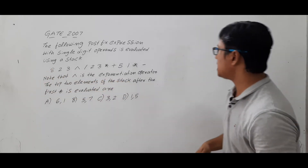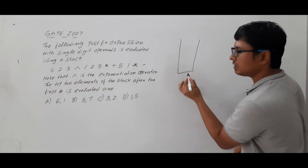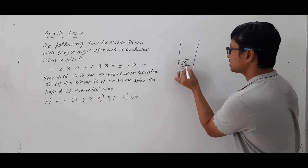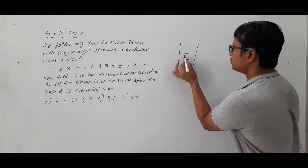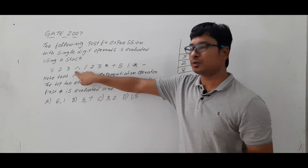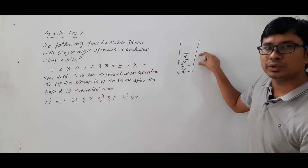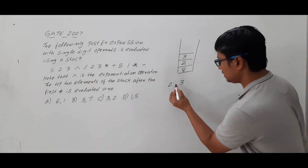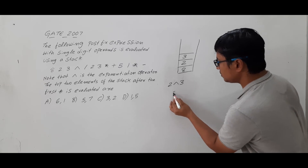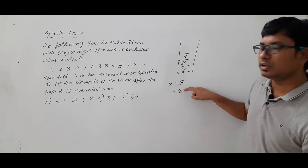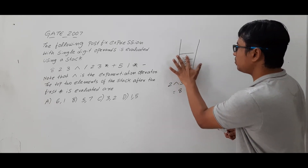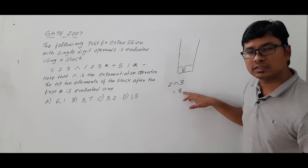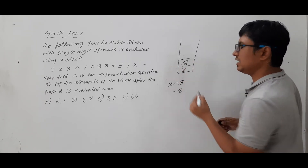As I scan 8, it is an operand, so I push it into the stack. Now 2 is an operand, I push it into the stack. 3 is an operand, I push it into the stack. Now I got an operator (exponentiation), so I pop the top two elements — 2 and 3 — and perform 2 power 3 which equals 8. I push this result into the stack. So now I have 8 and 8 in the stack.